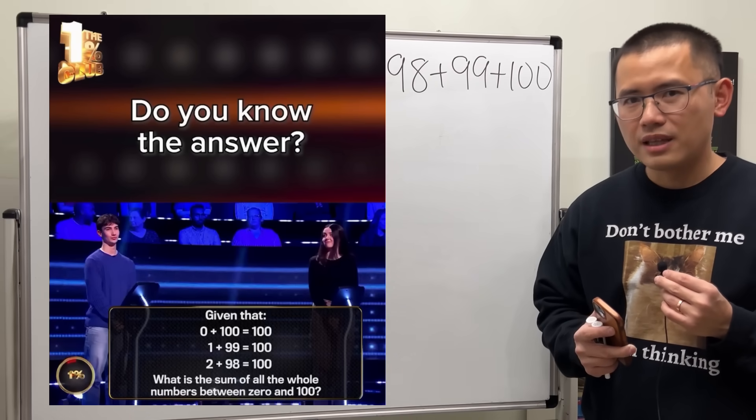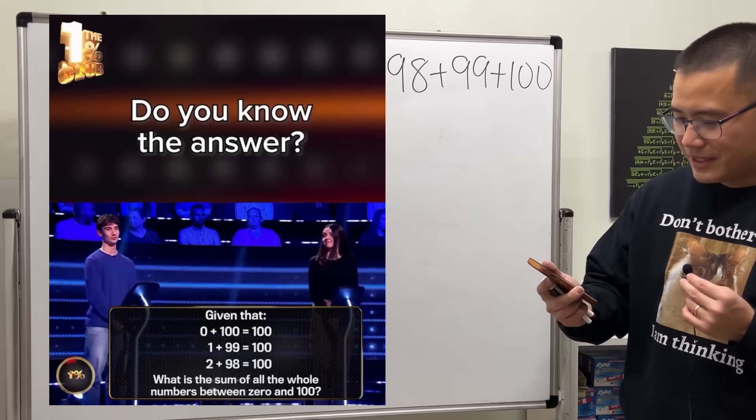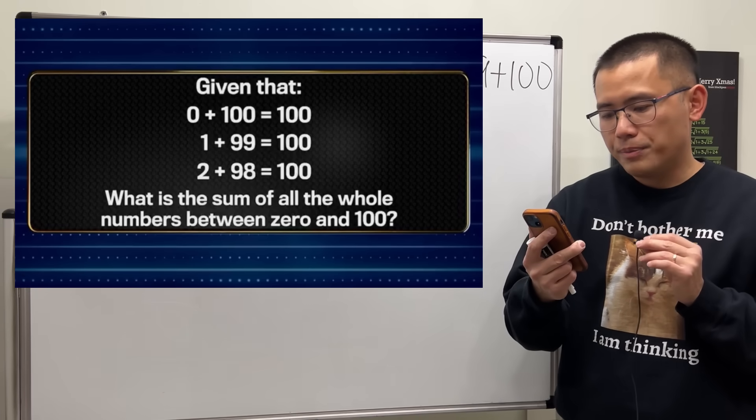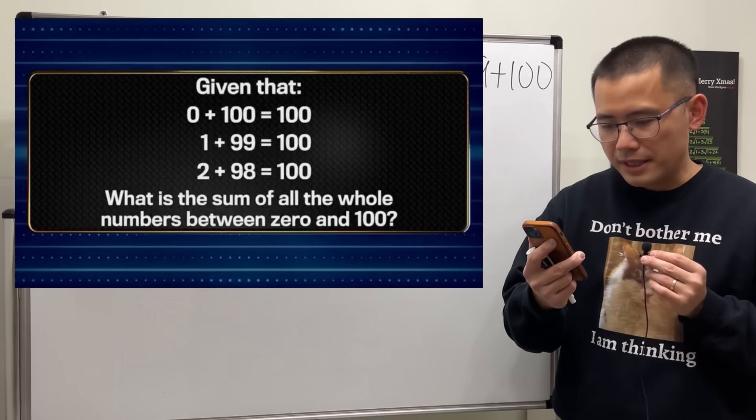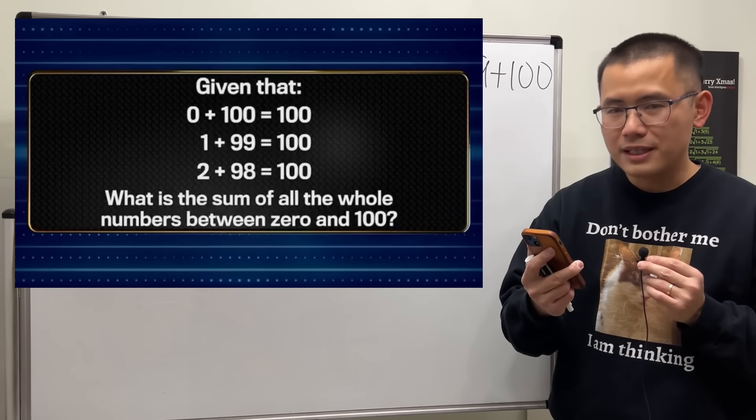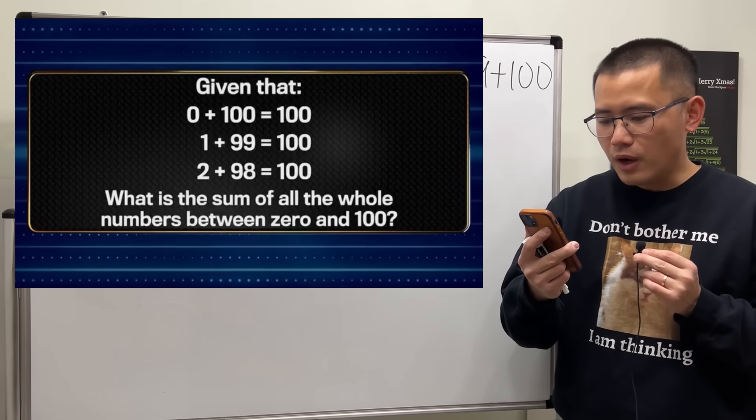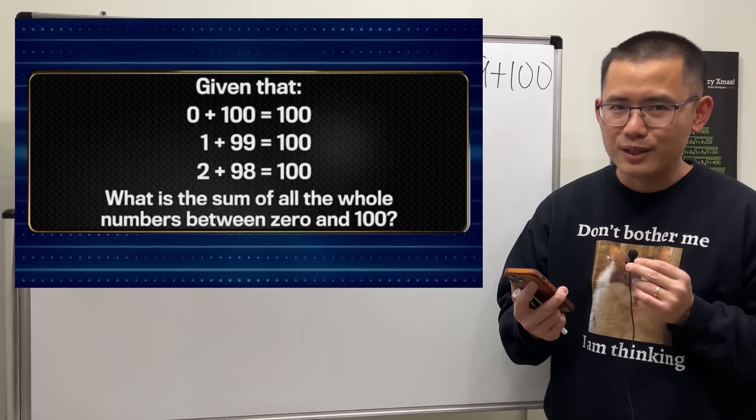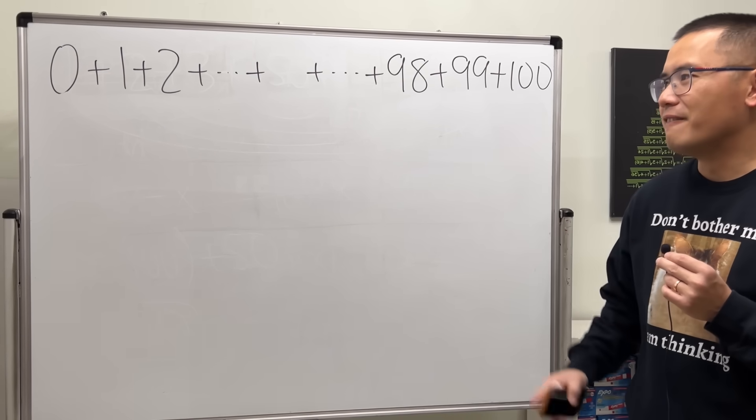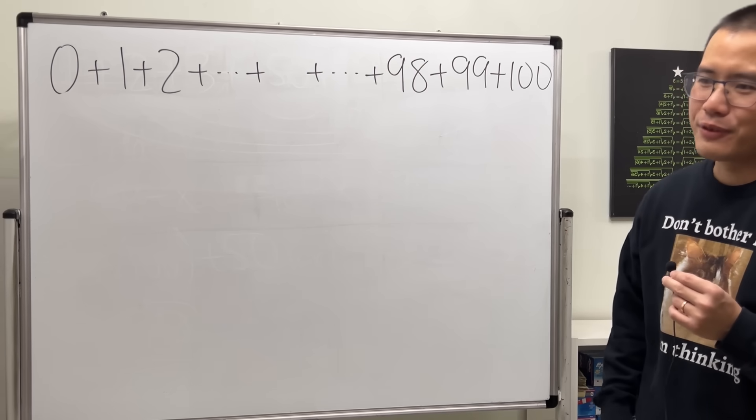I just saw this question on the One Person Club Instagram page. Let's take a look. Given that 0 + 100 = 100, 1 + 99 = 100, 2 + 98 = 100, the question is: what is the sum of all the whole numbers between 0 and 100? In fact, this is a very classic math question.